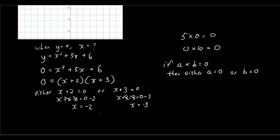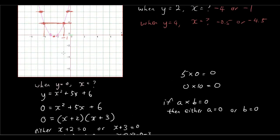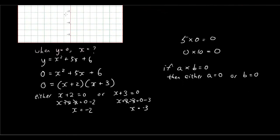So your answers are x equals negative 2 and x equals negative 3, and you can see that it matches the x-intercepts on our graph: x equals negative 2 and negative 3. So when y is equal to 0, x is equal to negative 2 and negative 3.